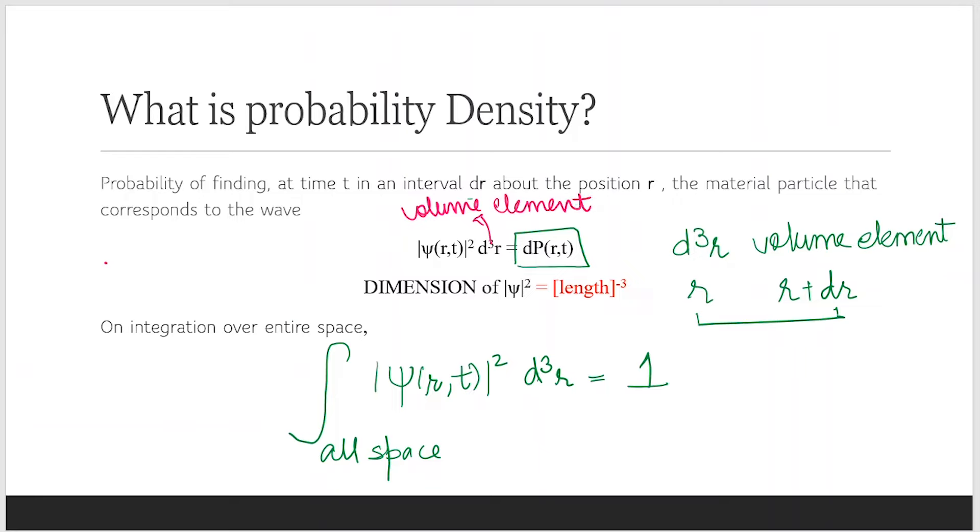So it has the length cubed dimension, and the probability has no dimension. So it should be length⁻³.